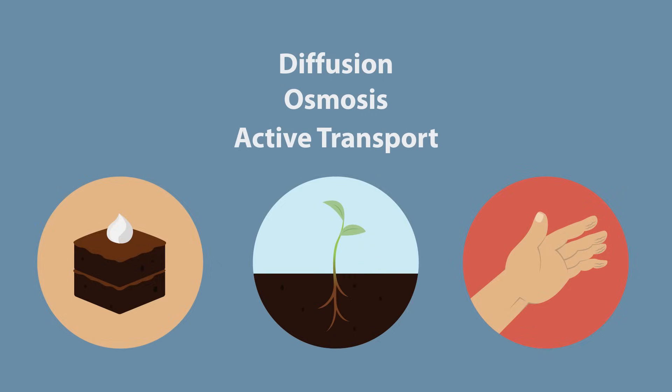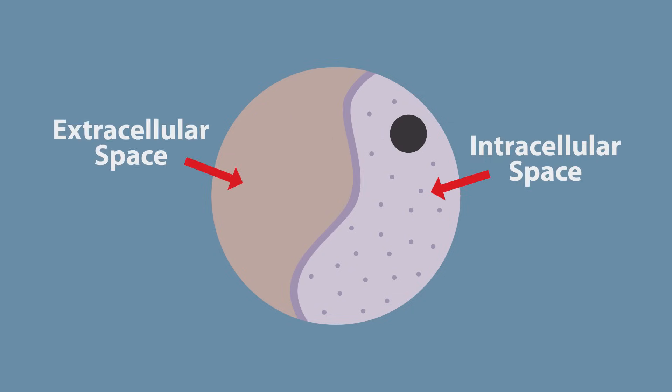In this two-part series, we're going to discover how cells take in useful substances and remove waste using these three methods of transport. The exchange of materials occurs between cells and their environment across the cell membrane.